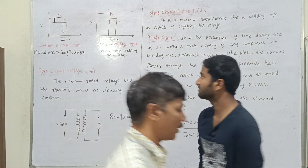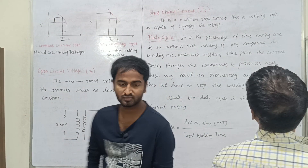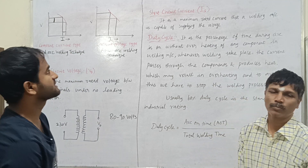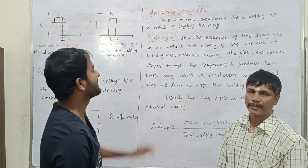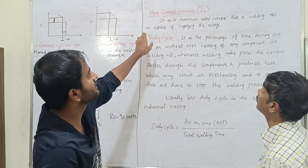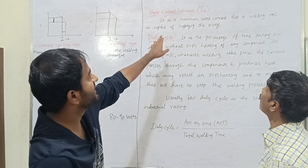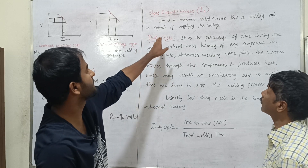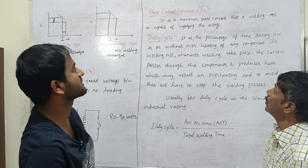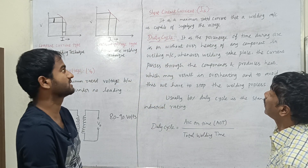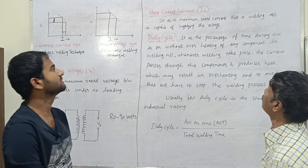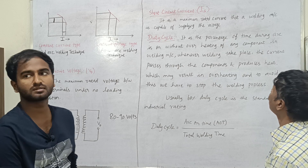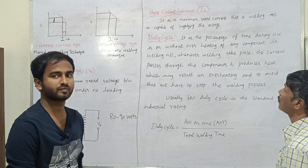How do we define short circuit current? If we use short circuit current, it is the maximum rated current that the welding machine is capable of supplying. So the maximum rated current is the short circuit current of the welding machine.